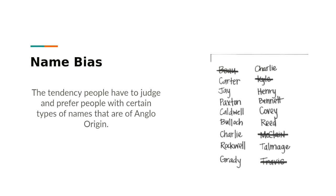Name bias is the tendency people have to judge and prefer people with certain types of names, particularly those of Anglo origin. Studies showed that white names were called back 50 percent more than other names after application submissions. Ways to avoid this include omitting the name or any hints at ethnicity from initial review, focusing on the content of the application first, since the actual substance should be worth more than just the name.